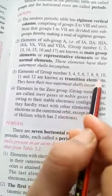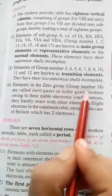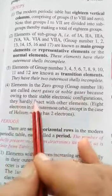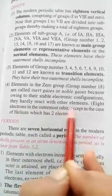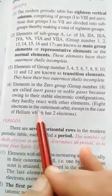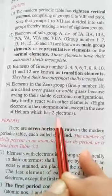Elements of group numbers 3, 4, 5, 6, 7, 8, 9, 10, 11, and 12 are known as transition elements and they have their two outermost shells incomplete. Elements in group zero, that is group number 18, are called inert gases or noble gases because they have stable electronic configuration. They hardly react with other elements. Eight electrons in the uppermost orbit, except in the case of helium which has two electrons.